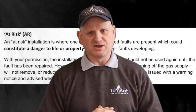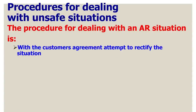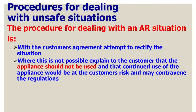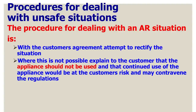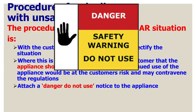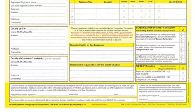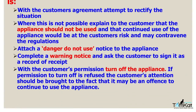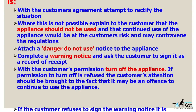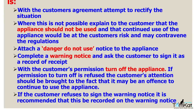Let's look at the at risk procedure. With the customer's agreement, attempt to rectify the situation. Where this is not possible, explain to the customer that the appliance should not be used and that continuing to use it would be at the customer's risk and may contravene the regulations. Attach a danger do-not-use notice to the appliance and complete a warning notice, asking the customer to sign it as record of receipt. With the customer's permission, turn off the appliance. If permission to turn off is refused, the customer's attention should be brought to the fact that there may be an offence to continue to use the appliance. If the customer refuses to sign the warning notice, it is recommended that this be recorded on the warning notice.